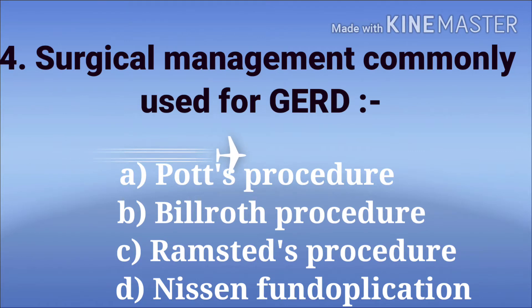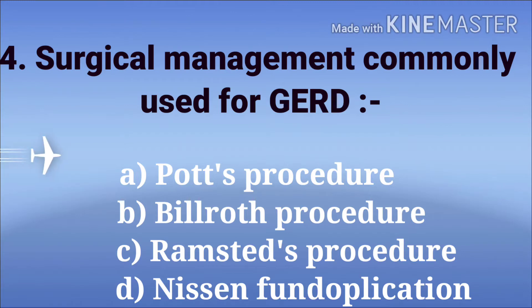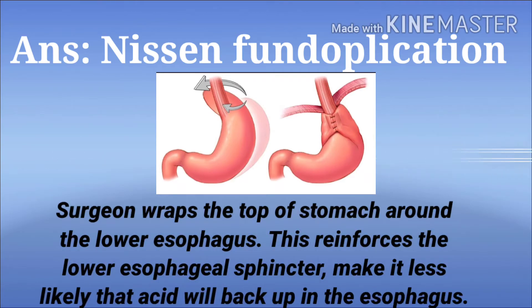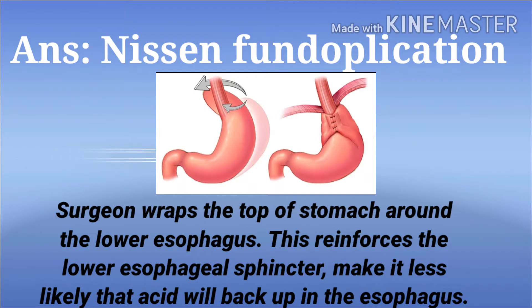Surgical management commonly used for GERD — gastroesophageal reflux disease. The options are POTS procedure, Bilroth procedure, Ramstead procedure, and Nissen fundoplication. In this procedure, the surgeon wraps the top of the stomach around the esophagus, reinforcing the lower esophageal sphincter, making it less likely that acid will back up into the esophagus. The answer is Nissen fundoplication.